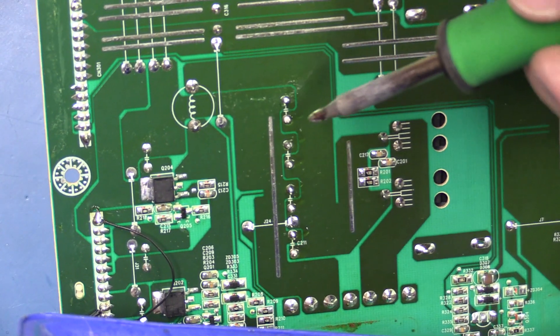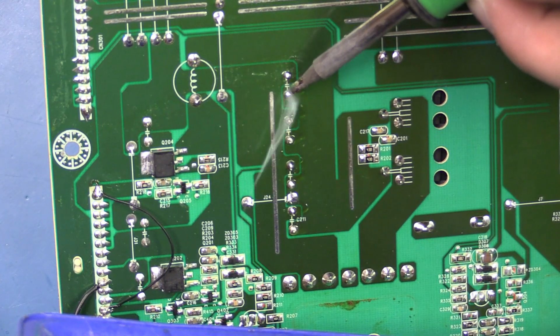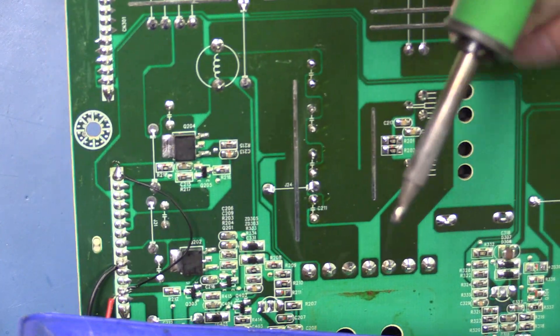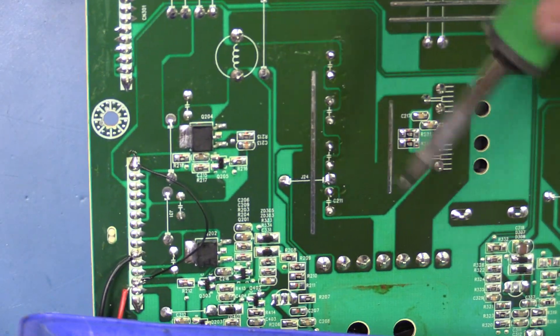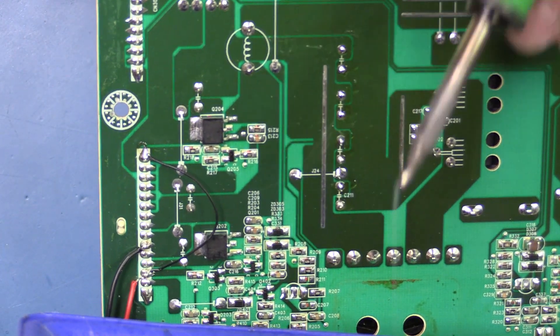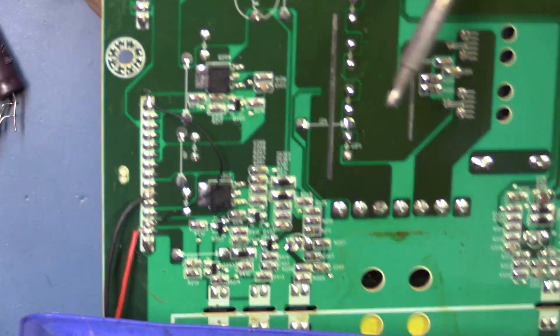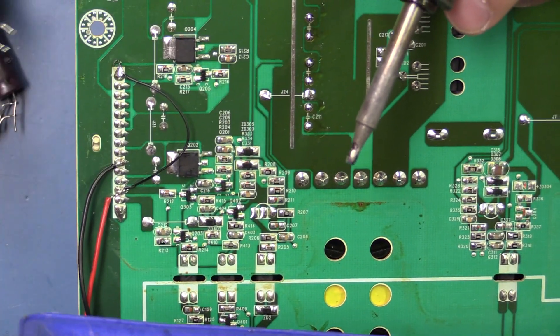With one hand on the back side, I'm going to desolder one joint at a time, kind of wiggling the capacitor back and forth until it comes fully out of the board. We'll do that three more times, and there we go—that's all four.